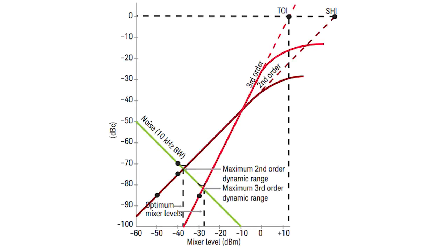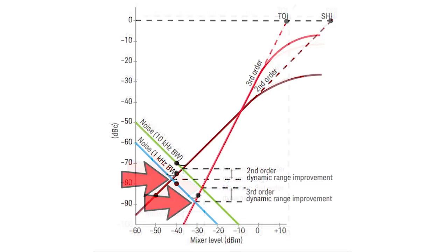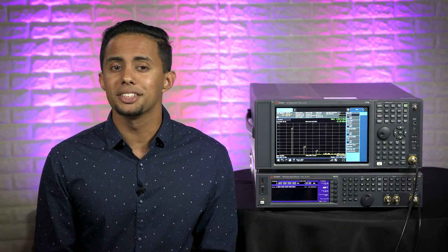What we effectively did by lowering the resolution bandwidth is lower the analyzer's noise level. As a result, we've improved our second and third order dynamic range, which enables us to see our signal's low-level harmonic signals. To further improve dynamic range by reducing the analyzer's internally generated distortion products, you can increase the attenuation while decreasing RBW — stay tuned for that in a future video. Note that using RBW only works for certain types of signals, so when dealing with other signals, this would not be appropriate to use on its own.